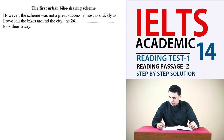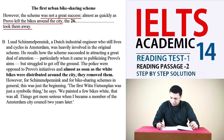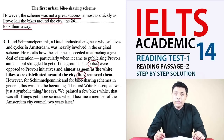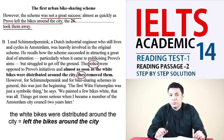The last question: 'However the scheme was not a great success — almost as quickly as Provo left the bikes around the city, ___ took them away.' The answer is in paragraph B. From the fifth to seventh lines, the police were opposed to the proposed initiative and almost as soon as the white bikes were distributed around the city, they removed them. 'Almost as quickly as' means the same as 'almost as soon as,' and 'distributed around the city' means the same as 'left the bikes around the city,' so the answer is 'police.'